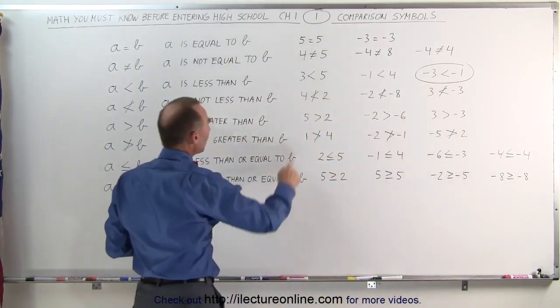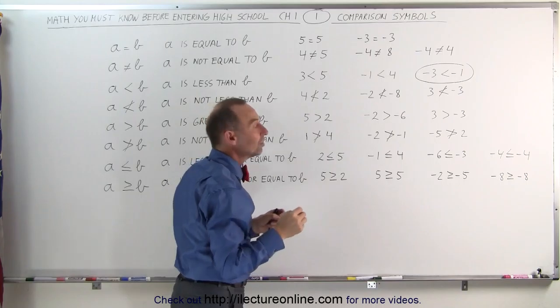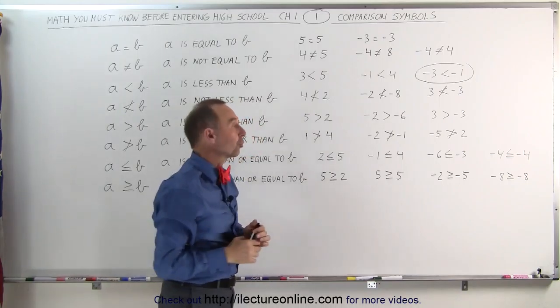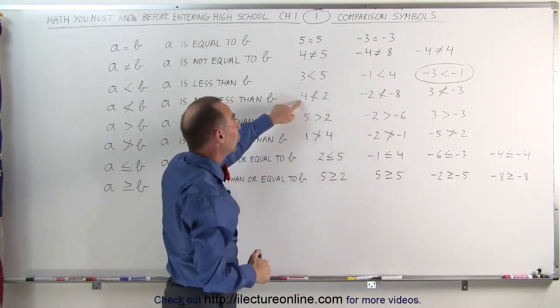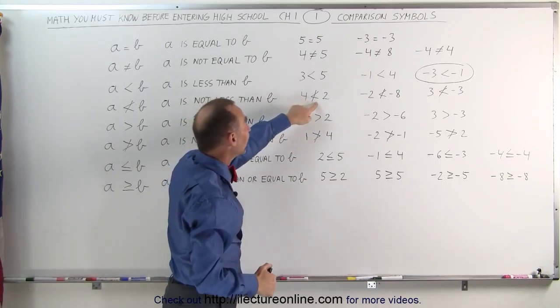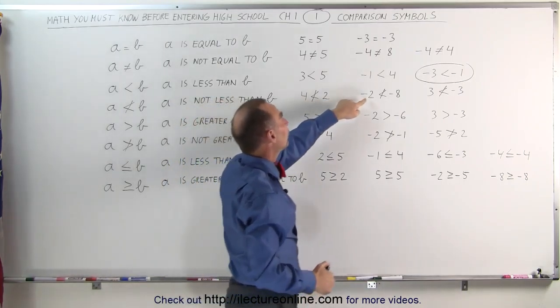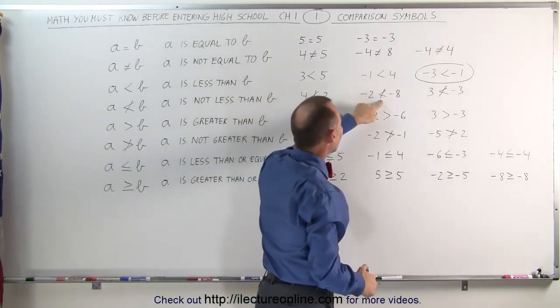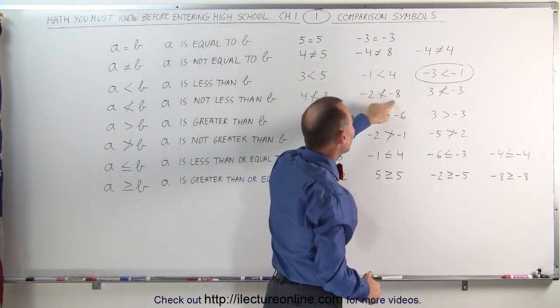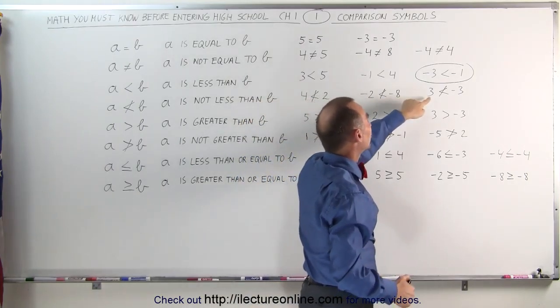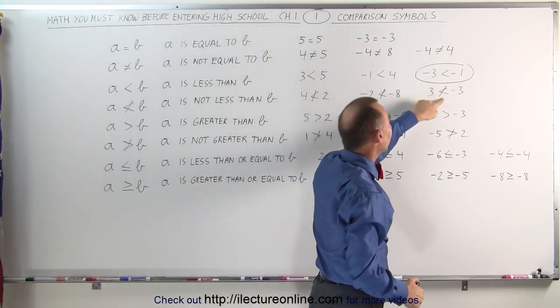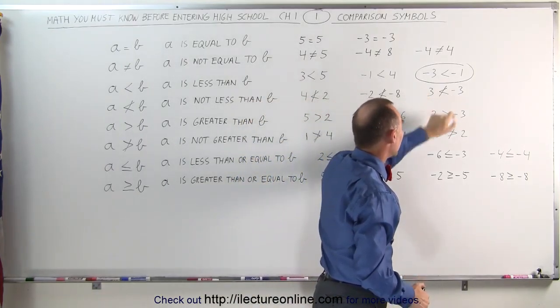When we put a line through it like that, it means that the condition is not true. 4 is not less than 2. Negative 2 is not less than negative 8. And 3 is not less than negative 3.